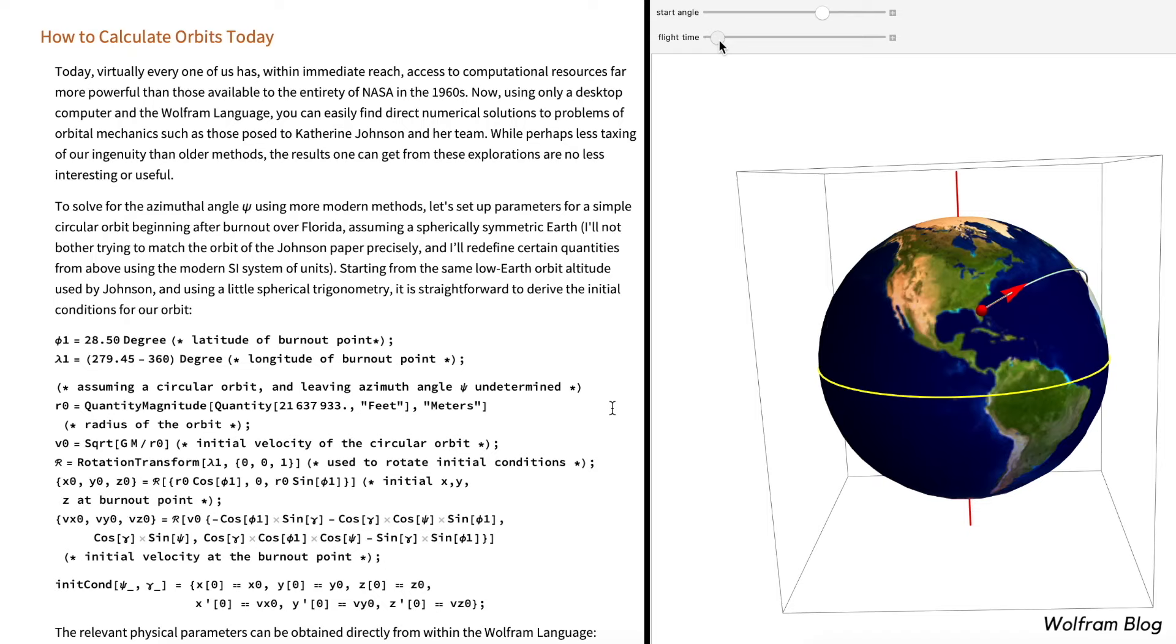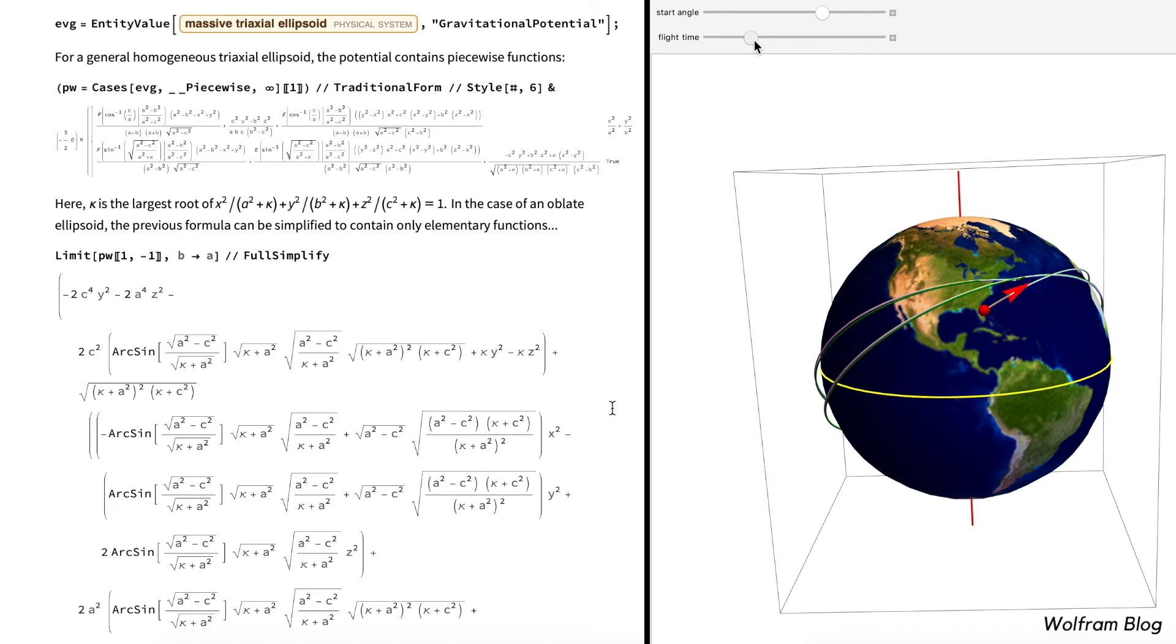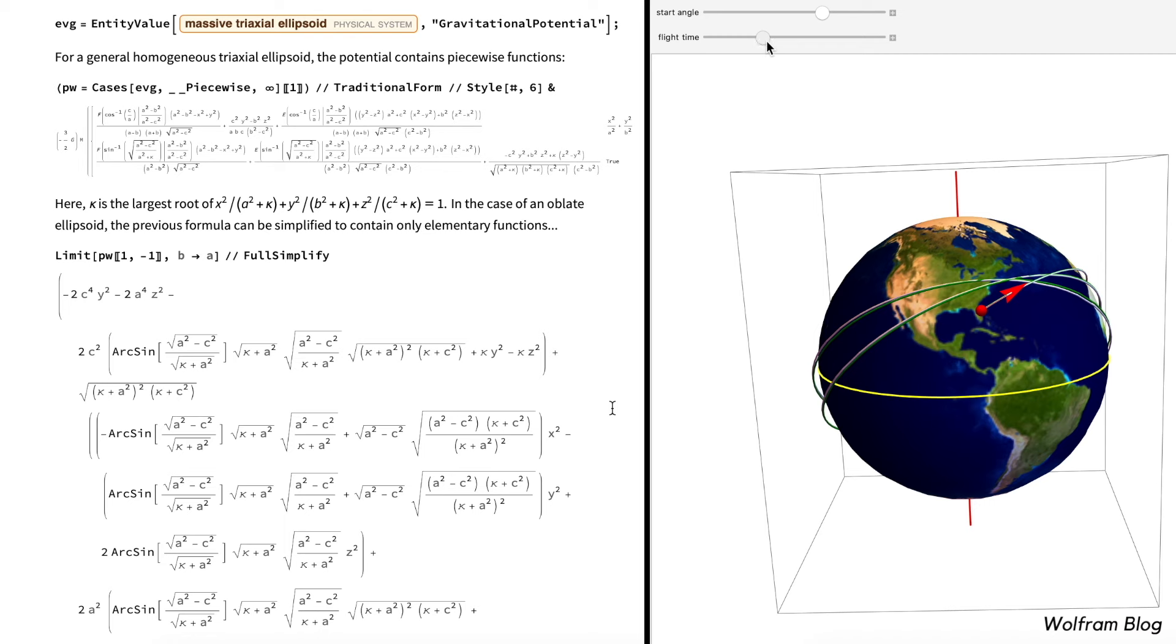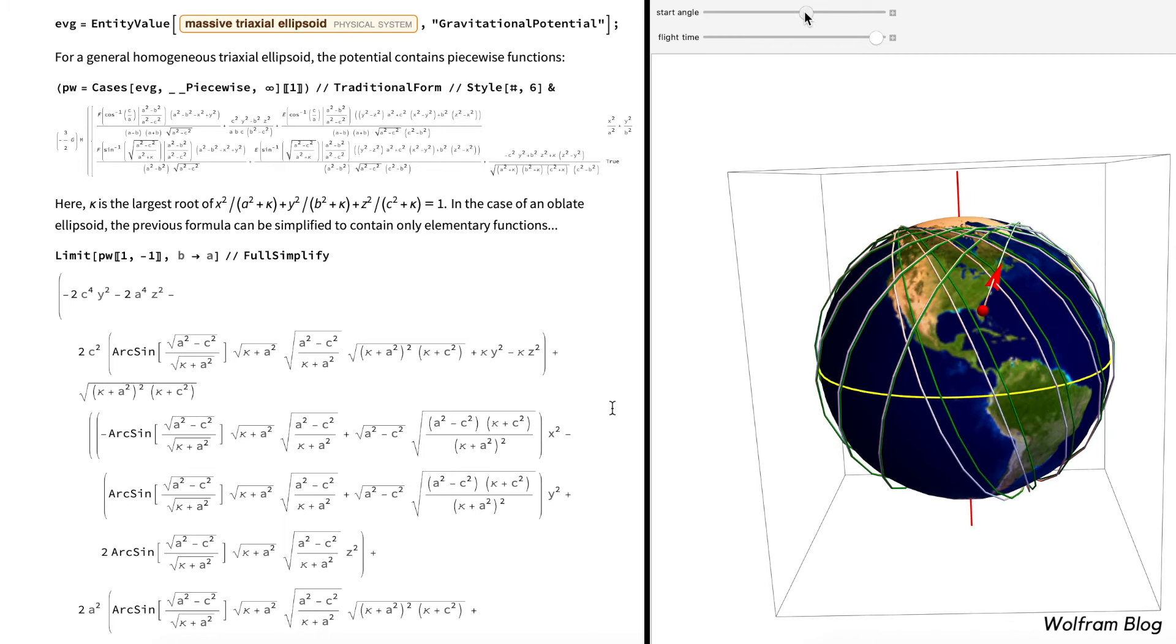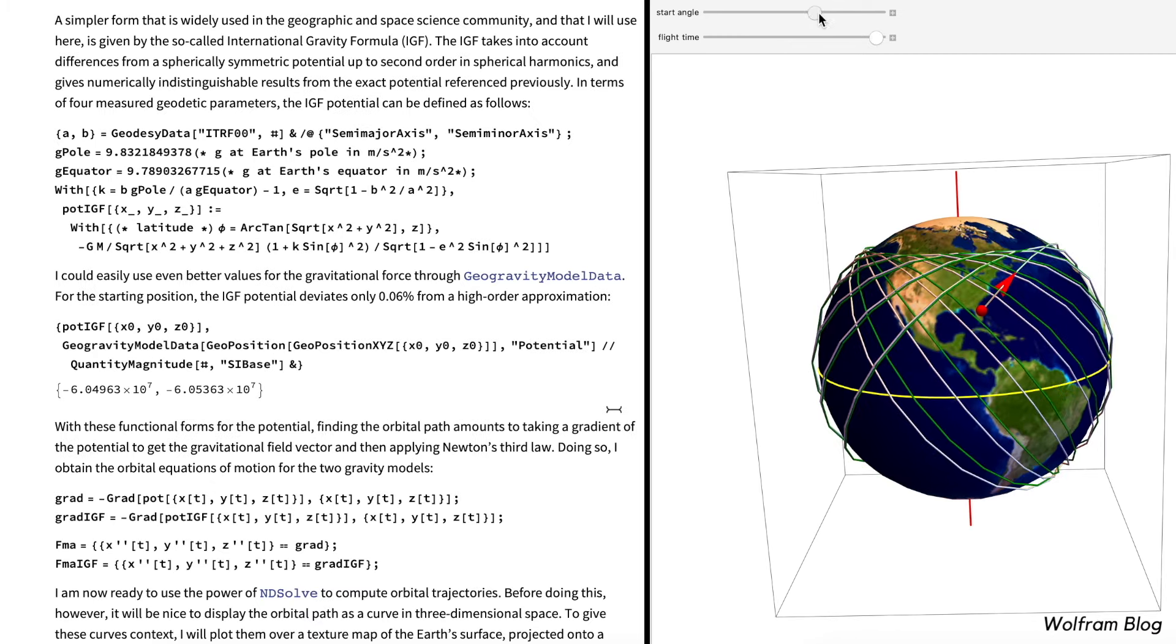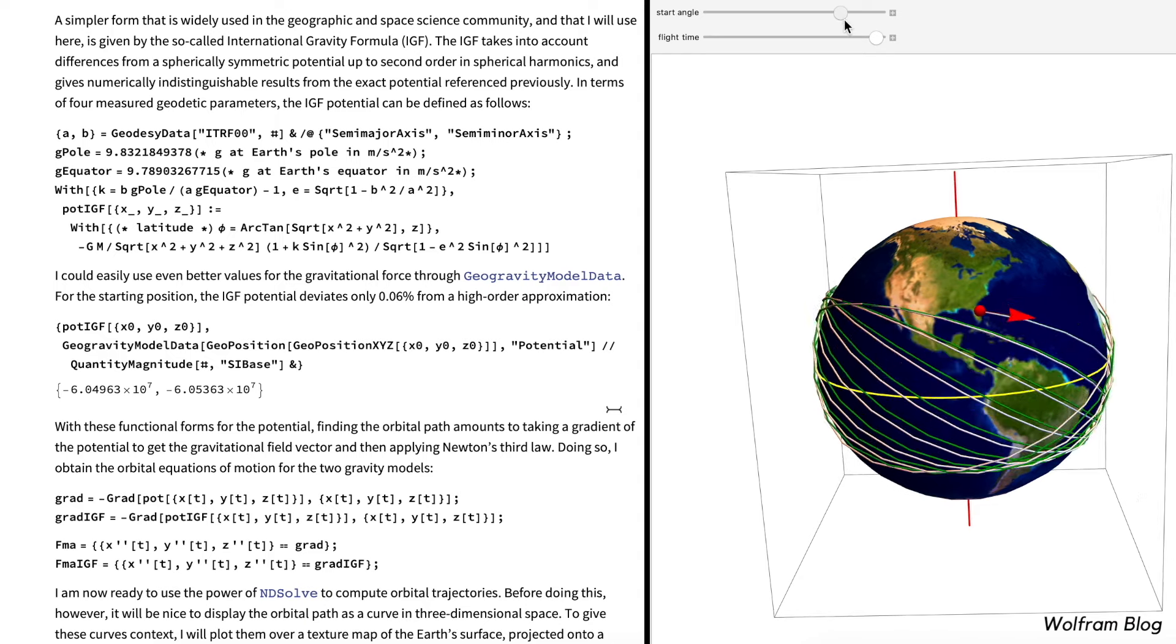Now we can do these things pretty much instantly. Here's some code on Mathematica which generates a graphic where you can just move the slider and see how moving the azimuth angle will change the location of the satellite after however many orbits you like.